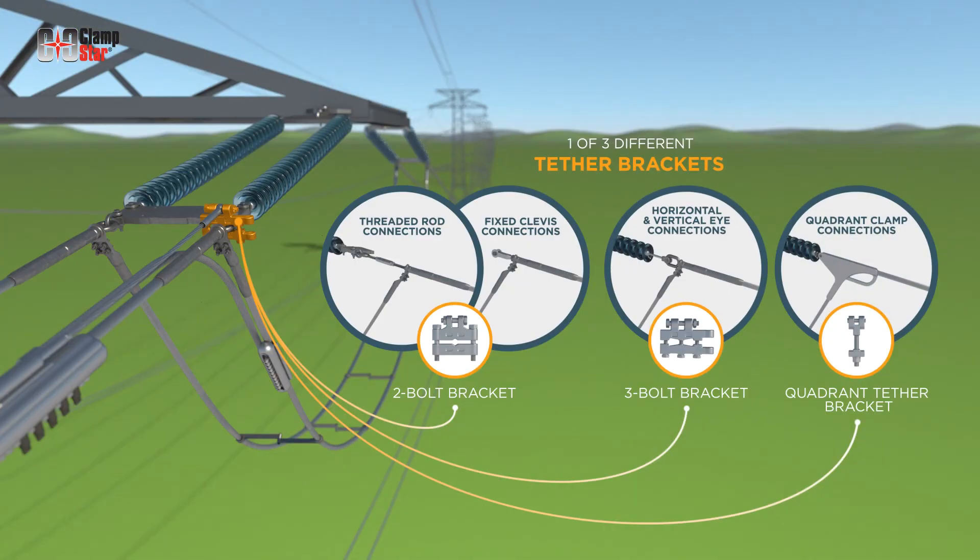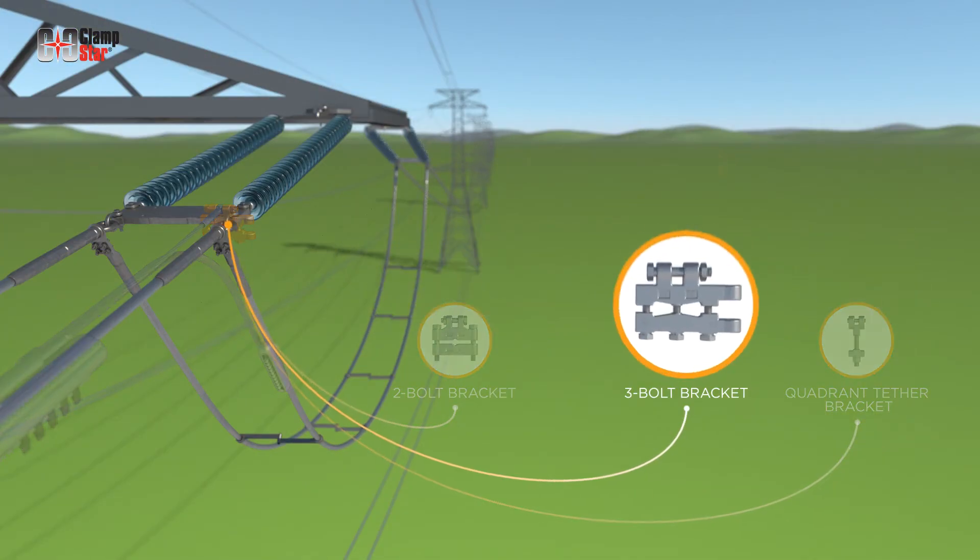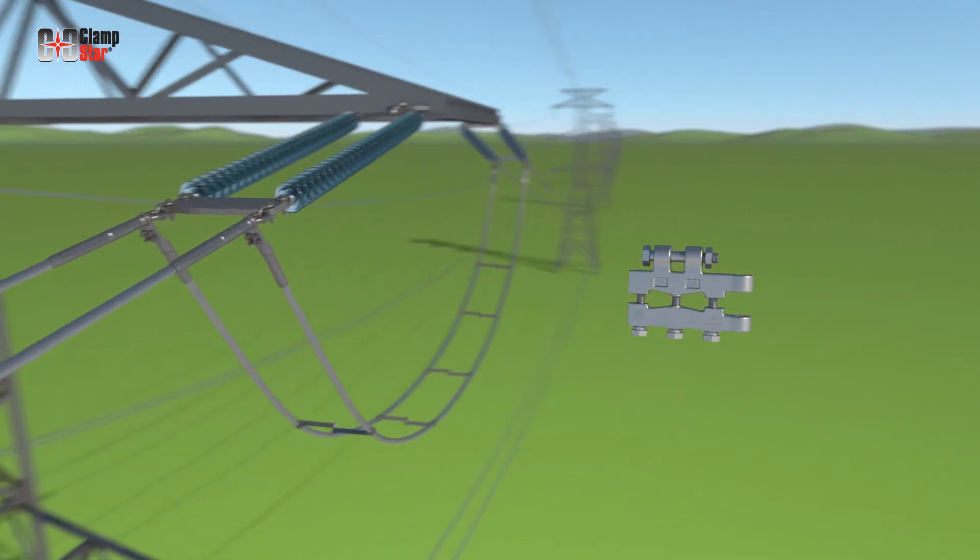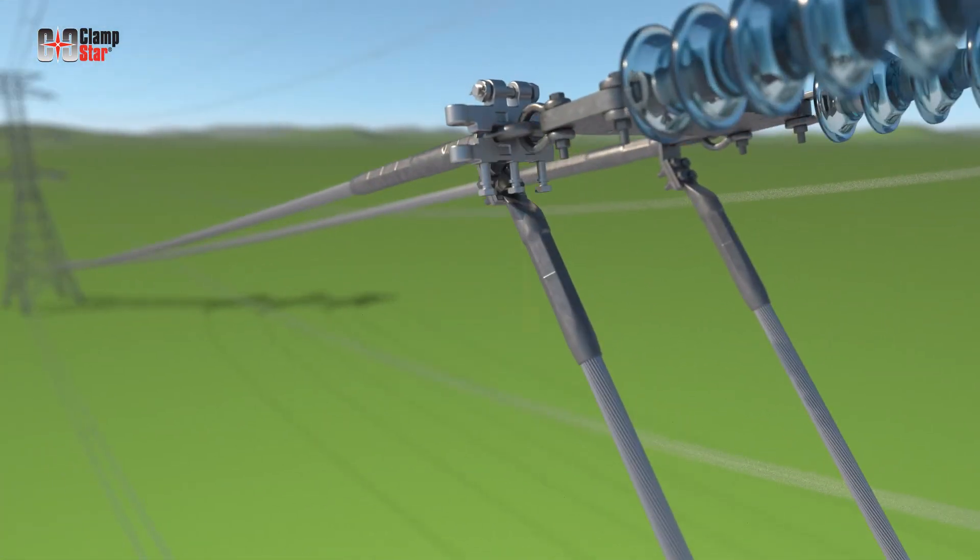Our next installation will demonstrate the proper attachment method for a three-bolt universal eye bracket in a horizontal orientation. As with the three-bolt bracket vertical orientation, tighten the center bolt first and alternate the tightening sequence in the outer two bolts to achieve an evenly distributed clamp load.